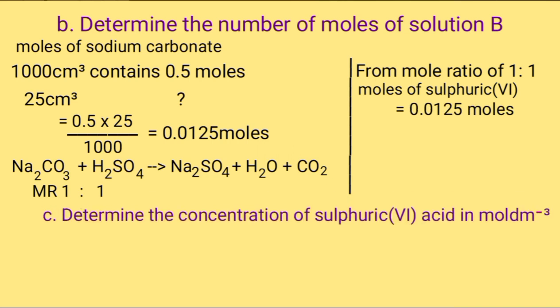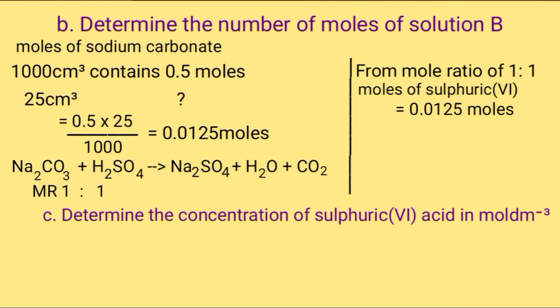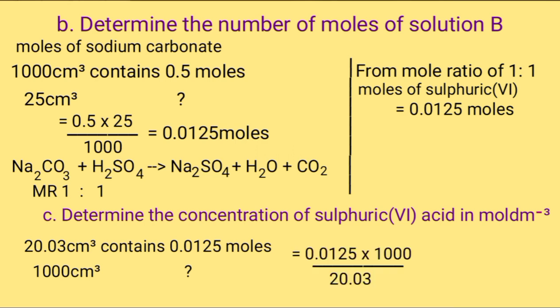Part c: Determine concentration of sulfuric(VI) acid in moles per dm³. Now the volume of sulfuric reactant is 20.03, so we'll say 20.03 cm³ contains 0.0125 moles. What about 1000 cm³? Cross multiply and get 0.624 mole per dm³.